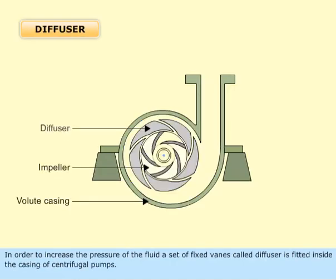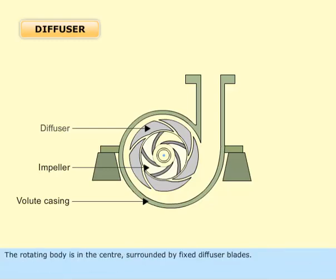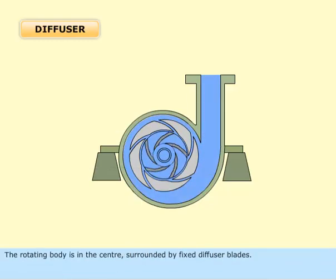In order to increase the pressure of the fluid, a set of fixed vanes called a diffuser is fitted inside the casing of centrifugal pumps. The rotating body is in the center, surrounded by fixed diffuser blades.